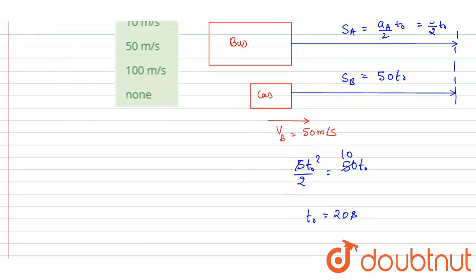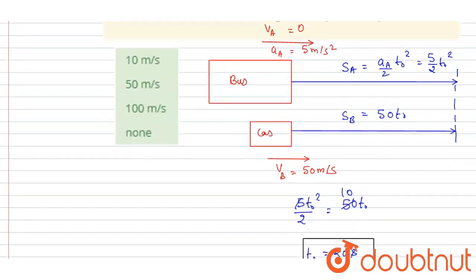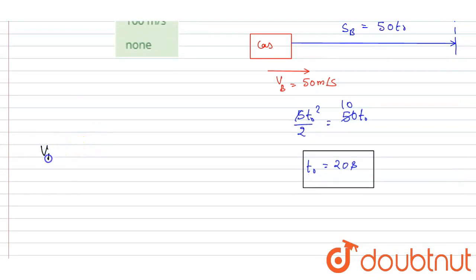Now we want at this instant the velocity of the bus. So I will write: velocity of the bus equals initial velocity plus acceleration into time t_0. Initial velocity is zero, so it will be 5 into t_0, which is 20, so it is 100 meters per second.